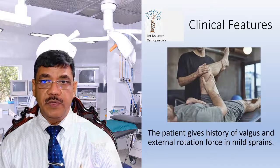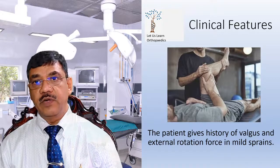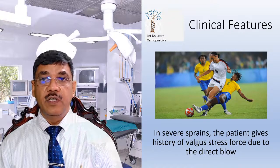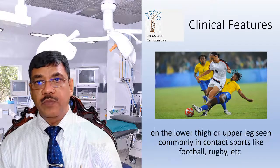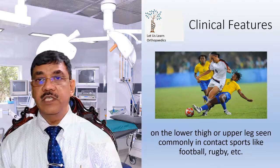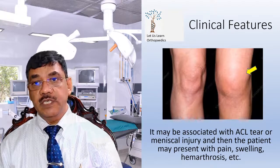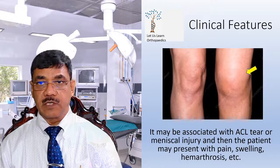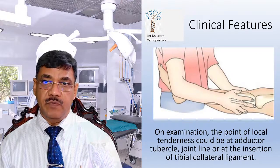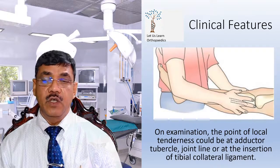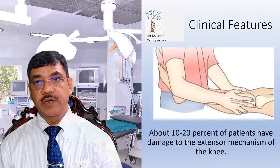Coming to clinical features, the patient gives a history of valgus and external rotation force in mild sprains. In severe sprains, the patient gives a history of valgus stress force due to a direct blow on the lower thigh or upper leg, commonly in contact sports like football or rugby. It may be associated with ACL tear or a meniscal injury, and the patient may present with pain, swelling, and haemarthrosis. On examination, the point of local tenderness could be at the adductor tubercle, joint line, or at the insertion of the tibial collateral ligament. About 10 to 20% of patients have damage to the extensor mechanism of the knee as well.